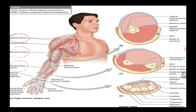In the next lecture we will discuss brachial fascia, palmar carpal ligament, superficial transverse metacarpal ligament, palmar aponeurosis, and bicipital aponeurosis. That concludes today's lecture.